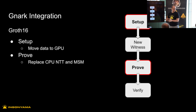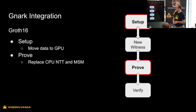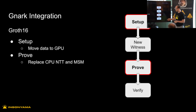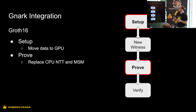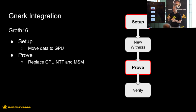We're going to move on to our GNARC integration and discuss what we did there and some learnings. For our GNARC integration, we specifically focused on the Groth16 protocol. The two areas that we needed to change were the setup phase and the proof phase. In the setup phase, we mostly just took data that was generated or computed by the CPU to the GPU so it could be there for when the proof phase came about. In the proof phase, we had two versions: one was a drop-in replacement line by line for each MSM and NTT, and one was a complete refactoring of the entire proof function from the GNARC code.